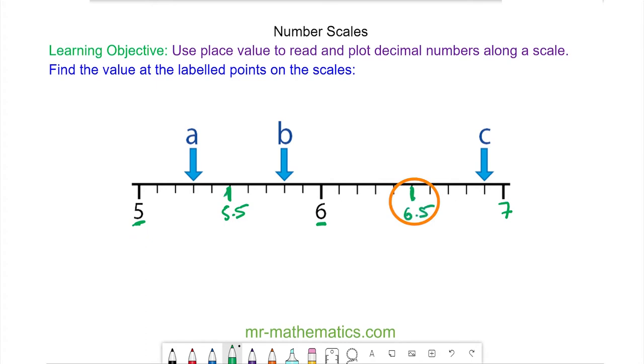You can see we have 5 marks between 5 and 5.5, so each of these will be worth 0.1. So a will be worth 5.1, 5.2, 5.3. We can work out b: 5.6, 5.7, 5.8. And we can work out c by going back by 0.1 from 7, so this will be 6.9.